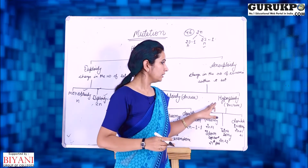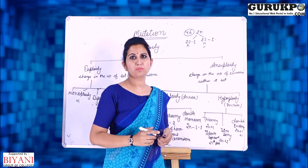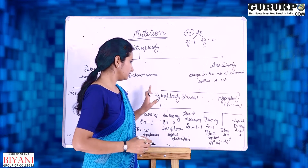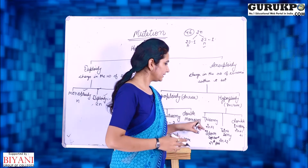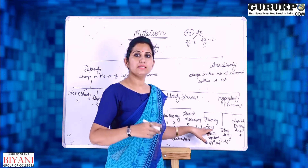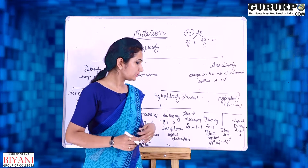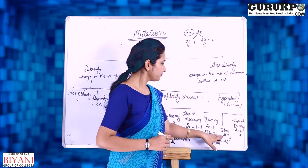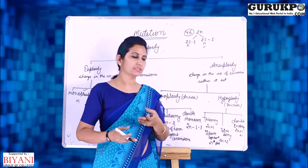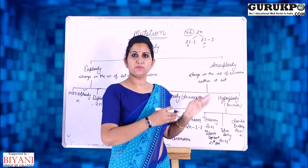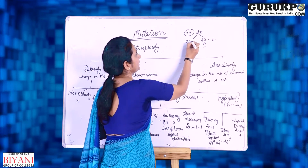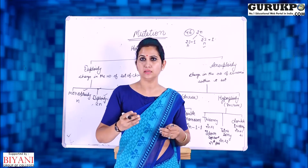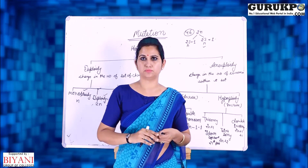Hyperploidy is also divided into three parts: trisomy, tetrasomy, and double trisomy. In trisomy, one chromosome gets added to any set. Its example is Down syndrome, which occurs at the 21st chromosome pair in human beings. In tetrasomy, two chromosomes in any one set are increased. In double trisomy, two chromosomes in two different sets each get an extra chromosome added, meaning trisomy occurs in two different sets simultaneously.